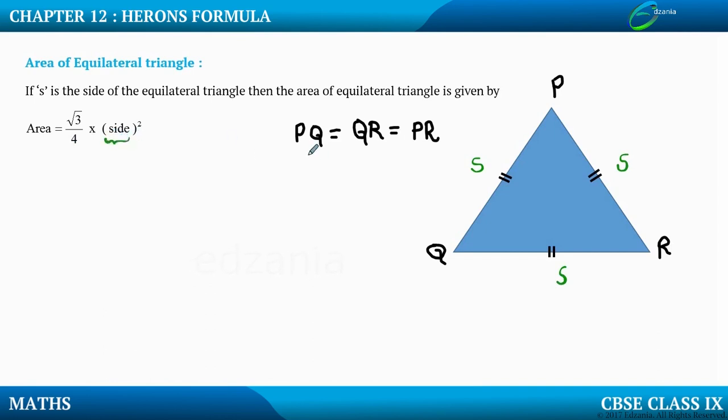So this side can be, you can select any side because all the three sides are equal. So it doesn't matter. I can write which is equal to root 3 upon 4 into S square. If you want to find out the area of equilateral triangle, then you should know this side.